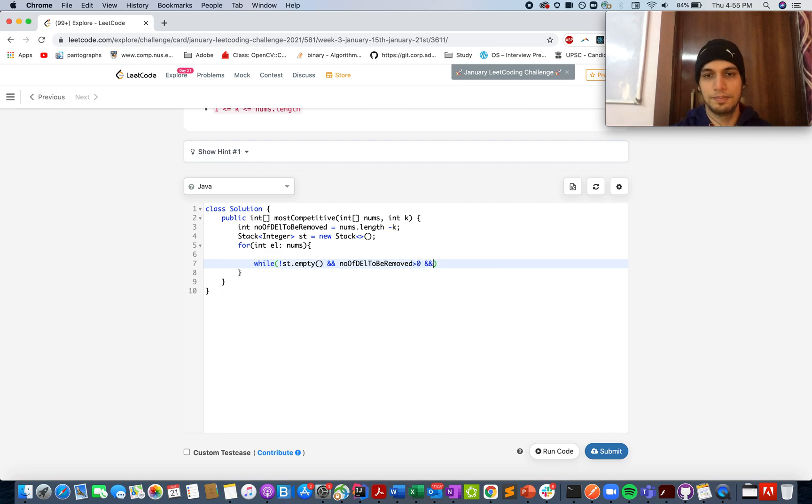And nums[i] - and st.peek(), the top element of the stack, turns out to be greater than the current element. What we will do is we will remove elements from the stack and we will reduce the number of elements to be deleted because we found one element that is not the potential candidate for an answer. Once we are done with this, we will add all the elements in the stack which is the primary step. In case the stack size is still greater than k, keep on removing from the stack.